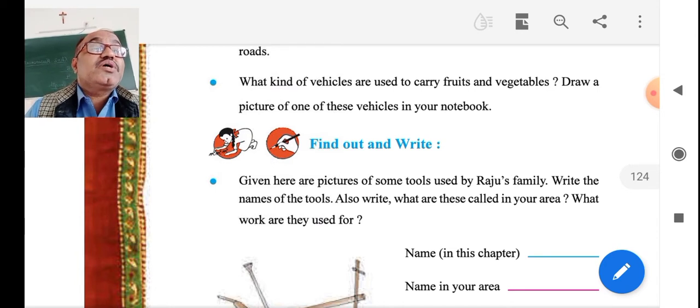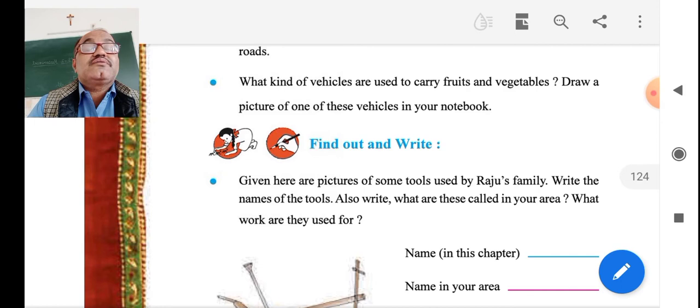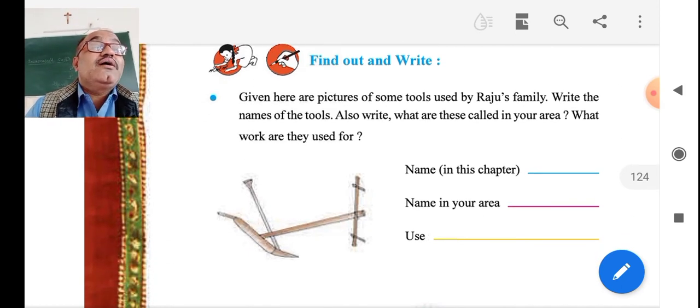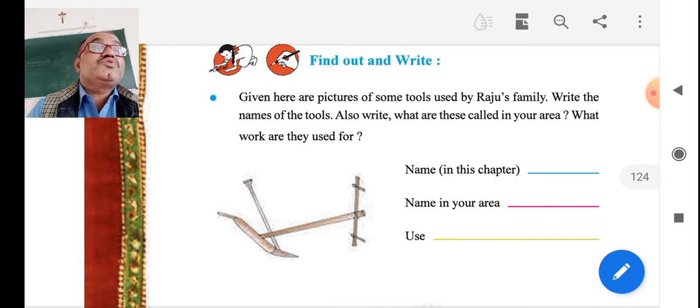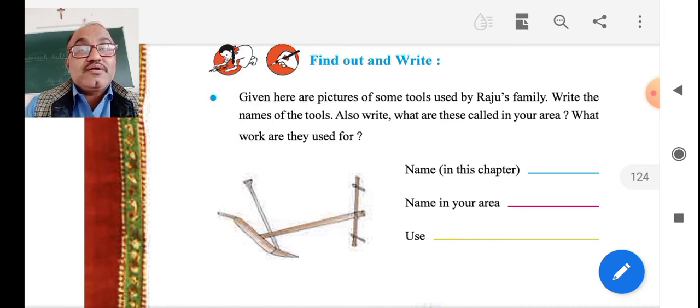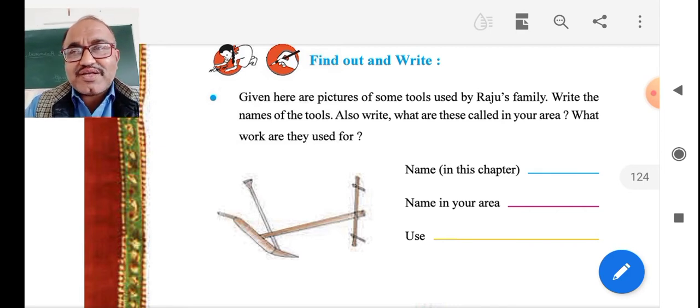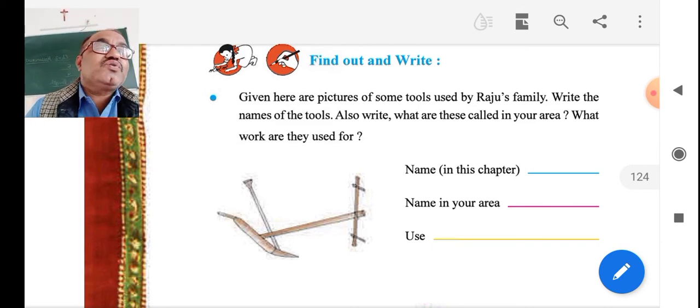Vehicles are used to carry fruits and vegetables. That vehicles, we can know very well. Tractor is one of the important things. Given here are the pictures of some tools used by Raju's father. Harvester, Tiller, Thresher, Modern Thresher, Ancient Thresher, some Desi method also used that.